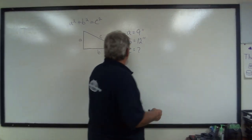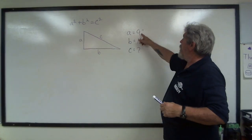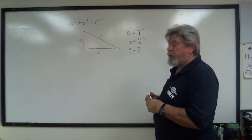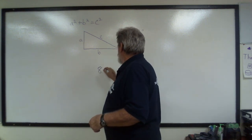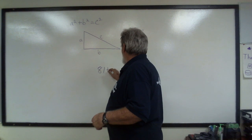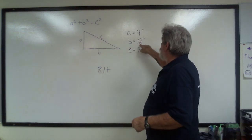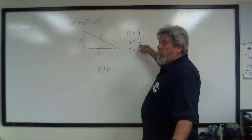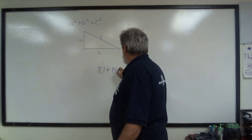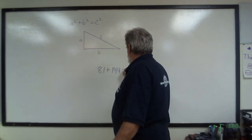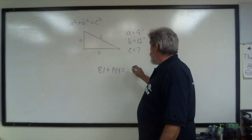We're going to take A, which is 9 inches, and we're going to square that, and that's going to become 81 because 9 squared is 81. And then we're going to add B squared, which is 12 inches. When you square 12, you get 144. And when you put them both together, you get 225.